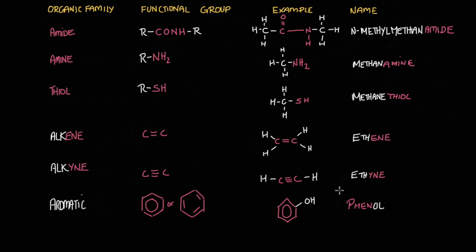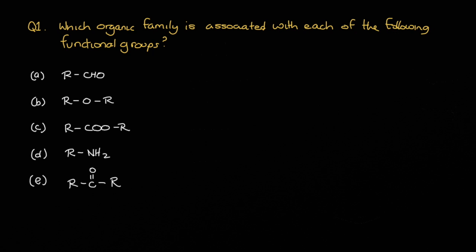Now quickly go over what we've covered and attempt the questions that come with this presentation. Question one: which organic family is associated with each of the following functional groups? Pause the video and come back when you're ready. A is an aldehyde because we're dealing with a CHO. B is an ether — remember, ethers have an O in the middle with an R group either side. C is an ester: COO in the middle with an R group either side. D is an amine, while E is a ketone — recall how ketones have their carbonyl group in the middle with R groups either side.